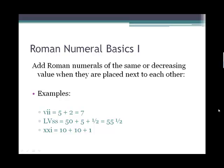Reading Roman numeral symbols, there's some basic rules. The first basic rule is to just add the numbers that you see. So VII would be 5 plus 1 plus 1 or 5 plus 2. An LV with SS: L is 50, V is 5, so that's 55, and SS is a half. And XXI is 10 plus 10 plus 1.